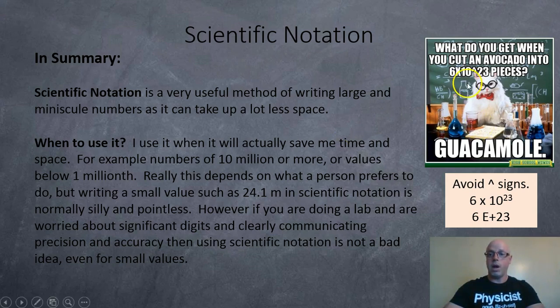And here's a little meme for Avogadro's number from the chemistry class. What do you get when you cut an avocado into 6 times 10 to 23 pieces? You get a guacamole. Because a mole, Avogadro's number, so many pieces are in a mole. So, but avoid using this hat sign, please. Try using superscripts. And in worst case scenario, you could always use the E symbol. Okay. All right, thank you.